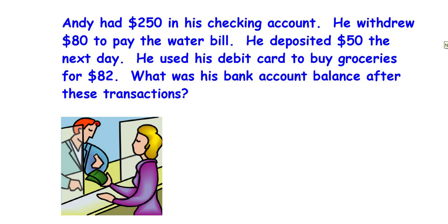Andy had $250 in his checking account. He withdrew $80 to pay the water bill. He deposited $50 the next day. He used his debit card to buy groceries for $82. What was his bank account balance after these transactions? The best strategy is to first underline the numbers so you don't skip any of them. By reading it, determine if these numbers are positive or negative, and then go ahead and solve it.